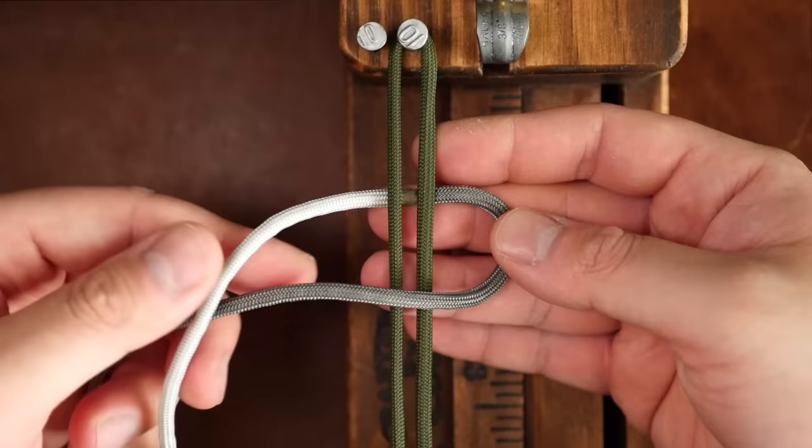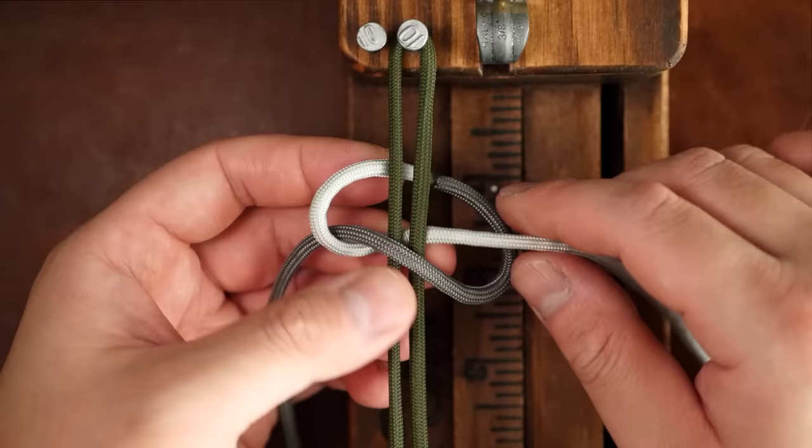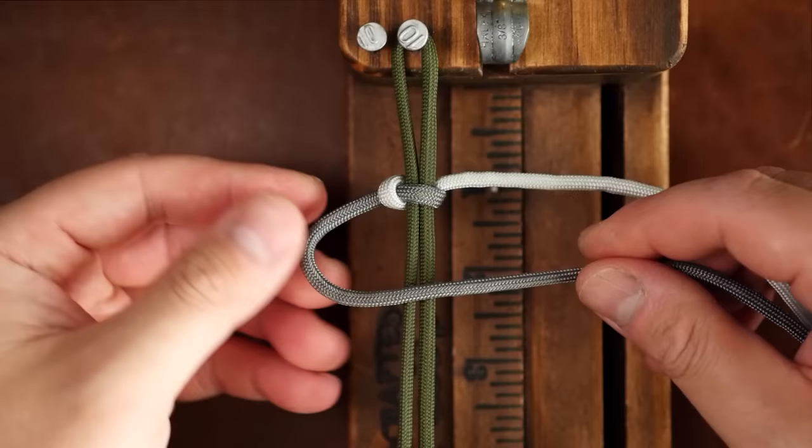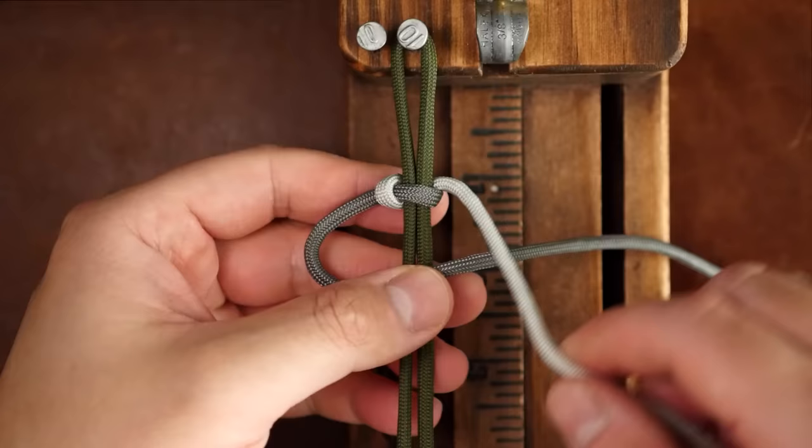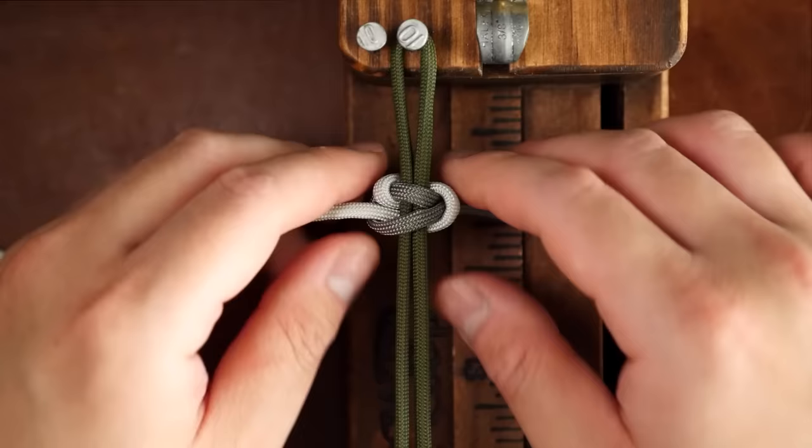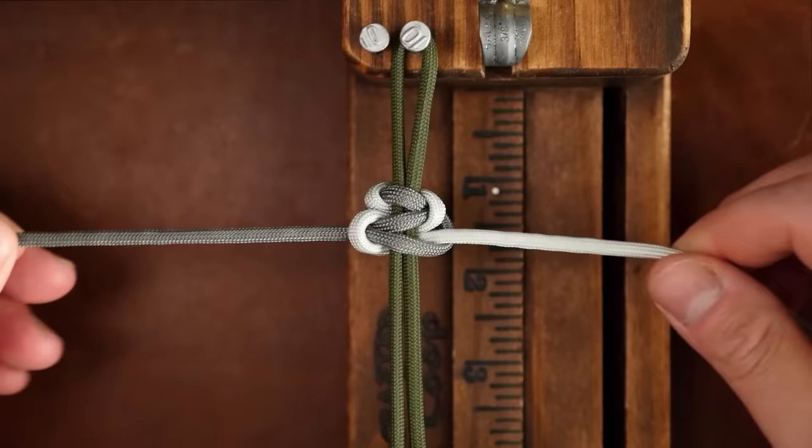A common mistake that beginners make is to not lead with the same strand. An easy way to know which side to cross over is the side that has the vertical cobra knot on that very same side. So repeat the same process based on which side that lead cord is on. If you don't use the same lead strand, it'll start to twist, which is the common mistake that beginners have.